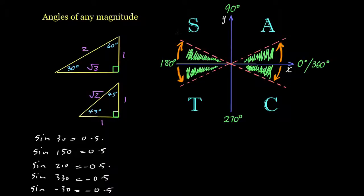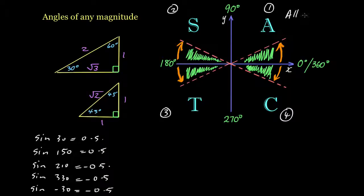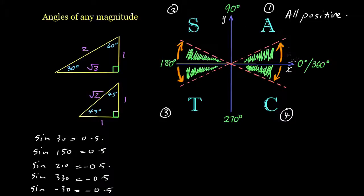We have four quadrants: the first, second, third, and fourth quadrant. The letter A shown in the first quadrant means that all trig functions are positive there. The first quadrant goes from 0 to 90 degrees. Sine 30 exists in that first quadrant and gave a positive result — all positive means sine, cos, or tan between 0 and 90 degrees will be positive.